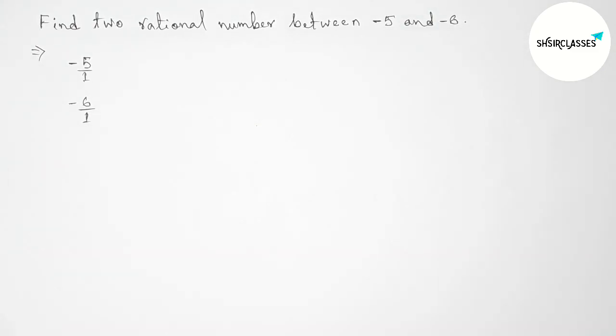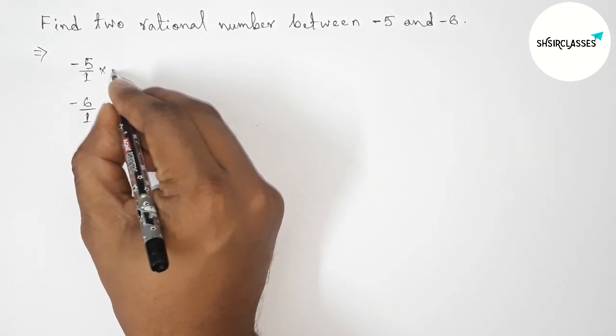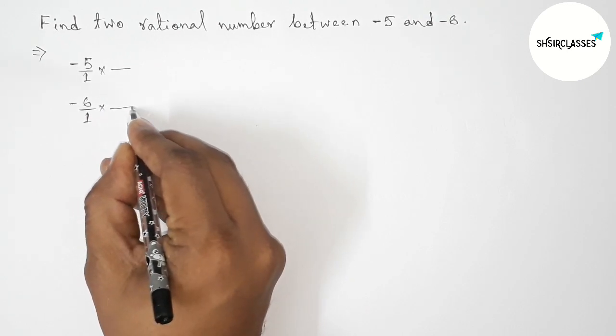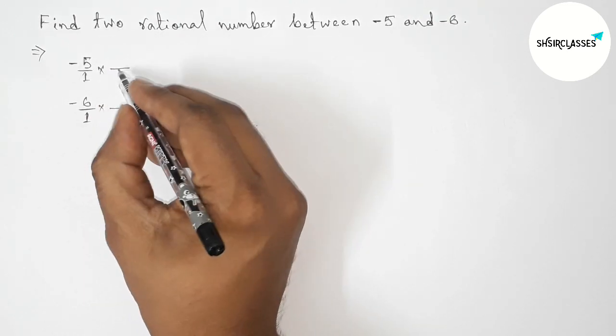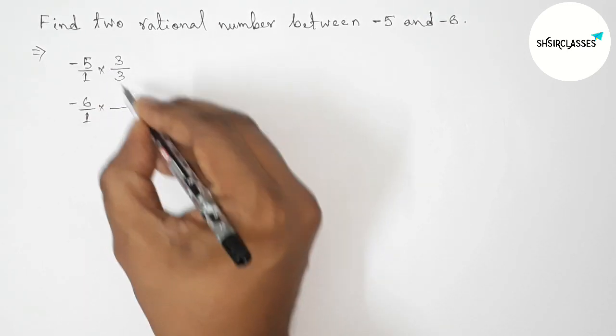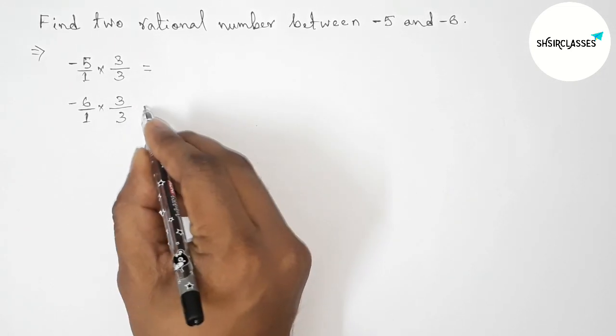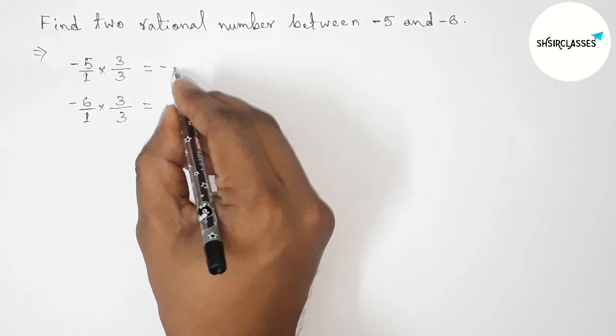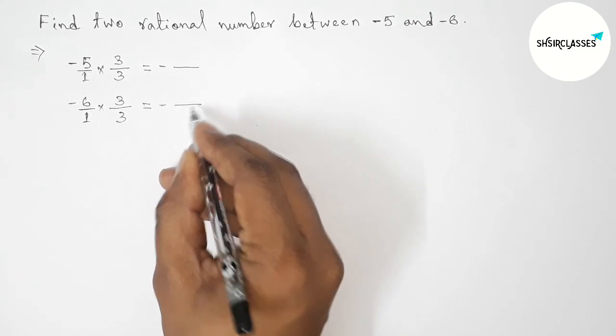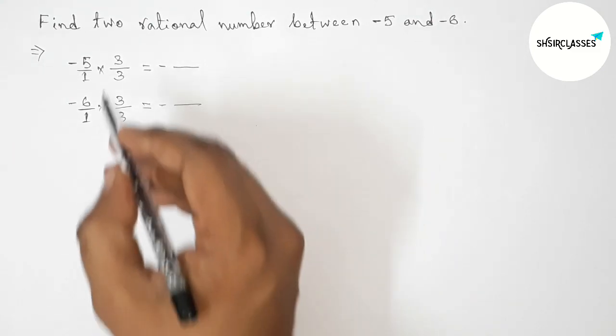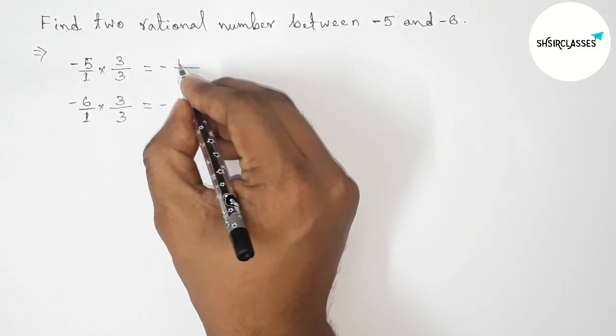And -6 as -6/1. Now we have to find two rational numbers, so we multiply both numbers by 3 up and down. For two rational numbers, that is 2 plus 1, which equals 3. Now simplifying: 5×3 is 15.